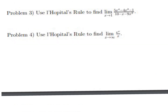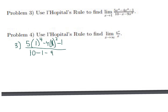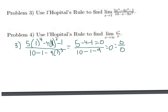For problem 3, we want to find the limit. The easy way is to start by substituting the x value. If we put in x = 1 into (5x² − 4x − 1) / (10x − 1 − 9x²), the top gives 5 − 4 − 1 = 0 and the bottom gives 10 − 1 − 9 = 0. We end up with 0/0, which is indeterminate and doesn't tell us anything about the limit.